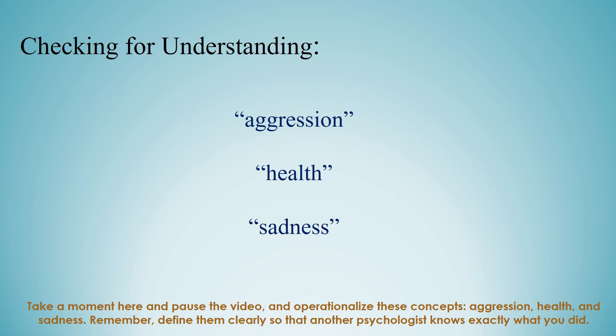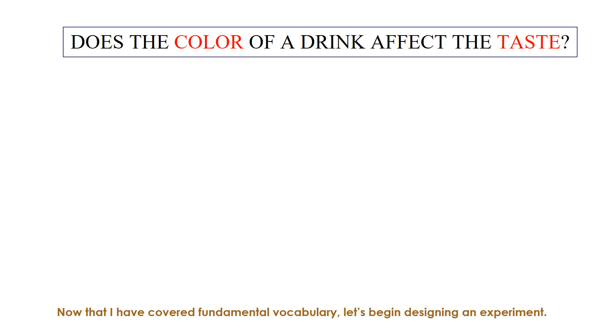Without defining the variables, no one would know how a psychologist investigated a particular research question. Take a moment to pause and operationalize these concepts: aggression, health, and sadness. Define them clearly so that another psychologist knows exactly what you did. Now that fundamental vocabulary is covered, let's begin designing an experiment.